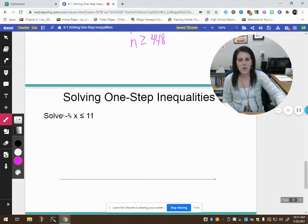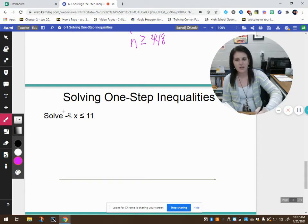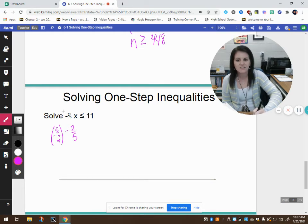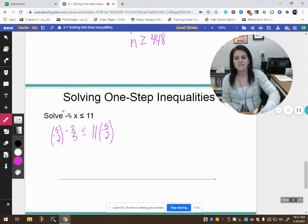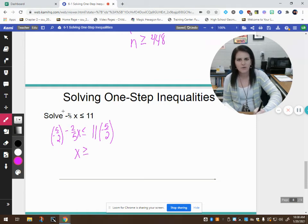Again, getting rid of the fraction is done by multiplying by the reciprocal. So if I have negative 2 fifths, I want to multiply by its reciprocal, that would be negative 5 halves. If I do that on one side I have to do it on the other. So multiply the other side by negative 5 halves. So 11 times 5 is 55, so I have 55 over 2. Oops, I forgot my x. So x – notice I'm flipping the symbol. Why did I change the direction of my inequality symbol? There's this rule that says if I multiply both sides by a negative number I have to flip the symbol.